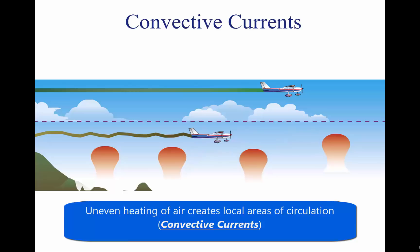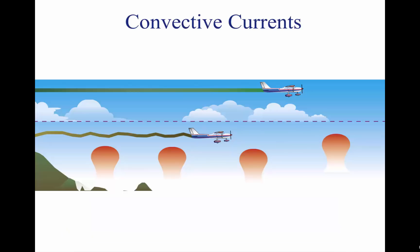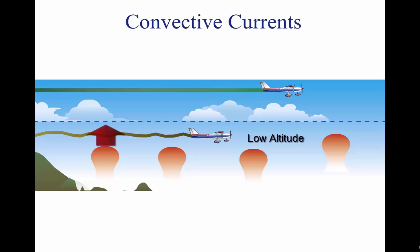The resulting uneven heating of the air creates small areas of local circulation called convective currents. Convective currents cause the bumpy, turbulent air sometimes experienced when flying at lower altitudes during warmer weather. On a low-altitude flight over varying surfaces, updrafts are likely to occur over pavement or barren places, and downdrafts often occur over water or expansive areas of vegetation, like a group of trees.